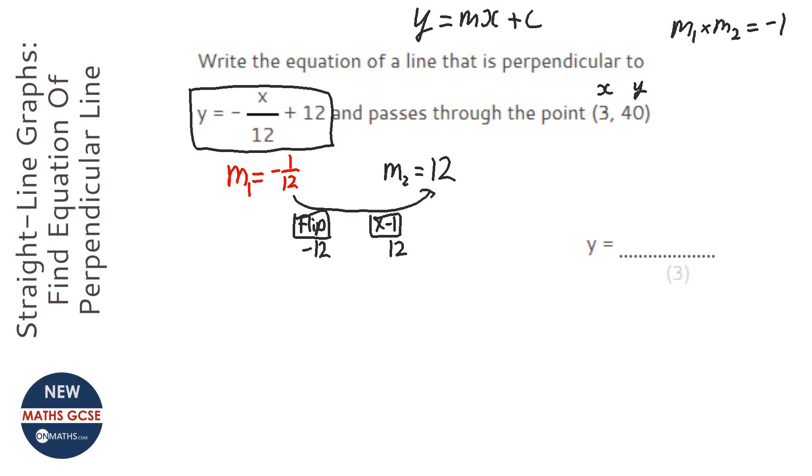So our gradient of our line is 12, but we still need to work out what the y-intercept is. We're going to do that by writing out y equals mx plus c, and just filling in the bits that we know. Well, we know when x is 3, y is 40, so let's feed those in, so y equals 40, and we know the gradient is 12, so 12 times 3 plus c.